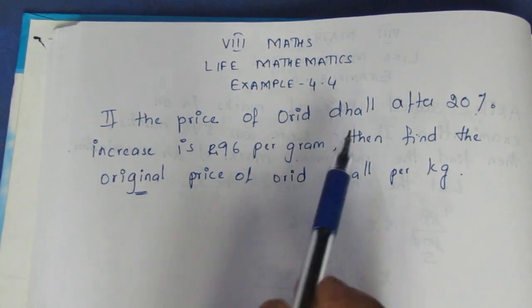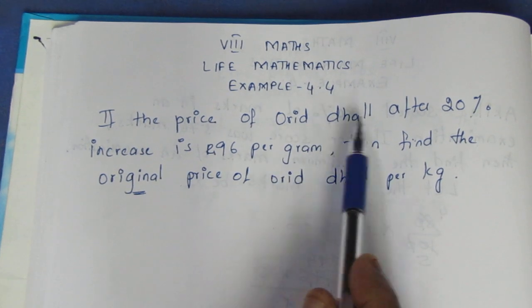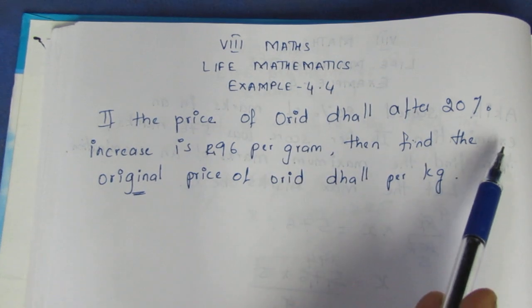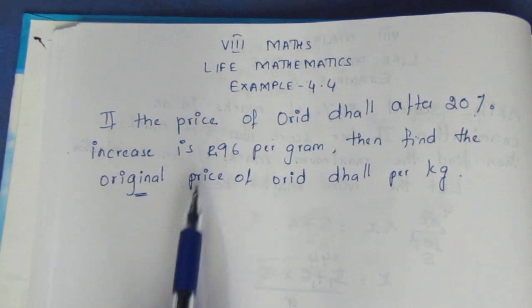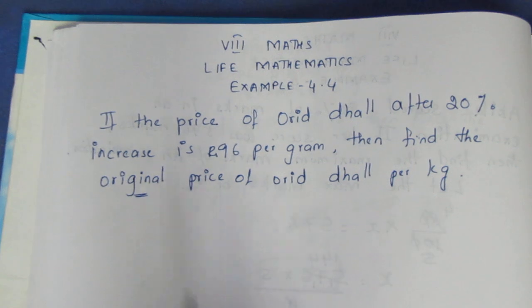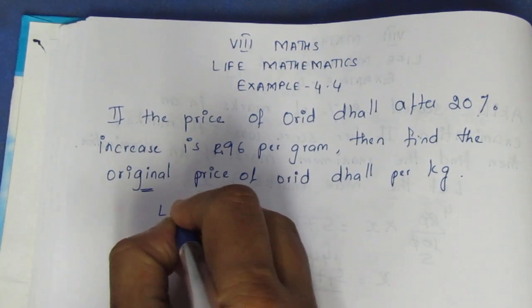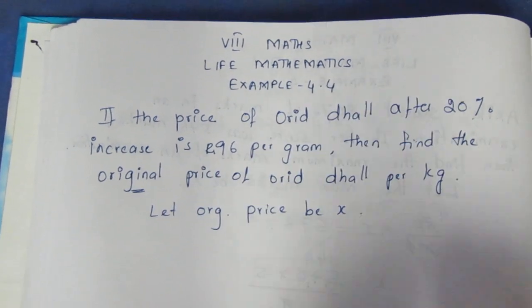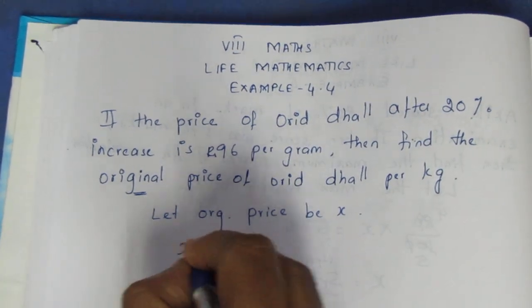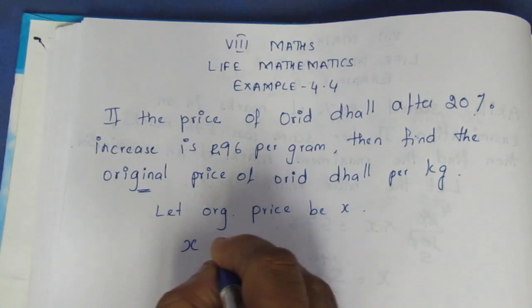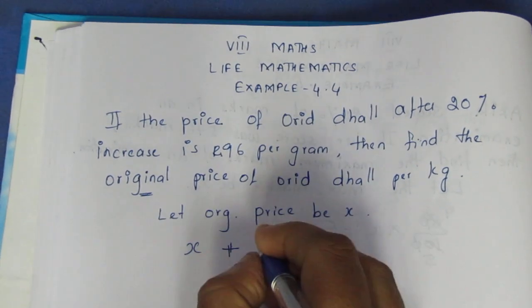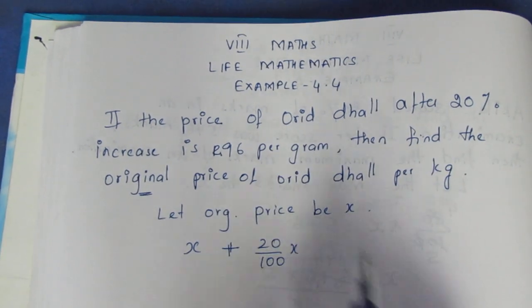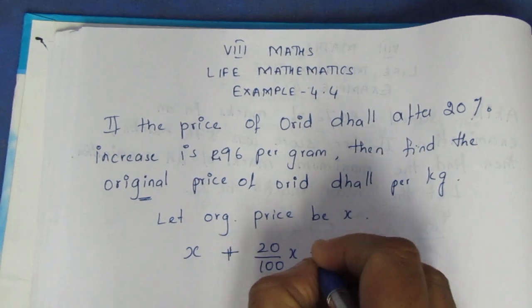The price of Urad dhal after 20% increase is Rs. 96. Let the original price be x. The price with 20% increase is x plus 20/100 times x, which is equal to 96.